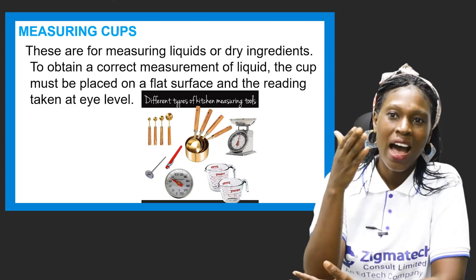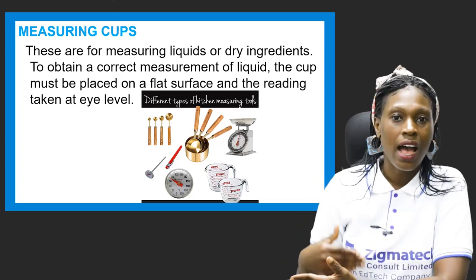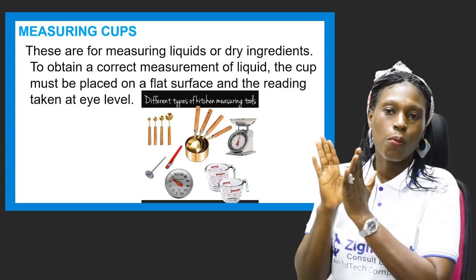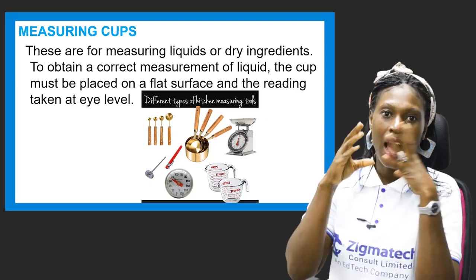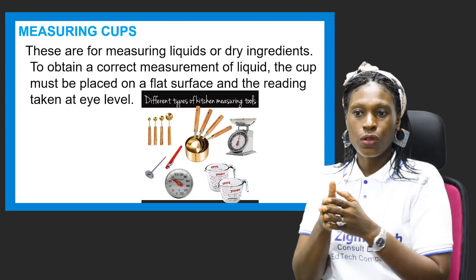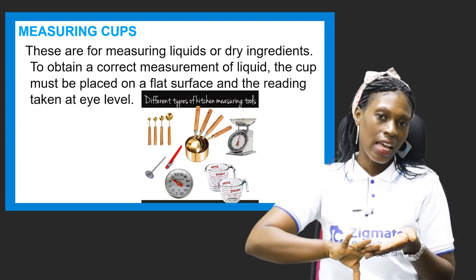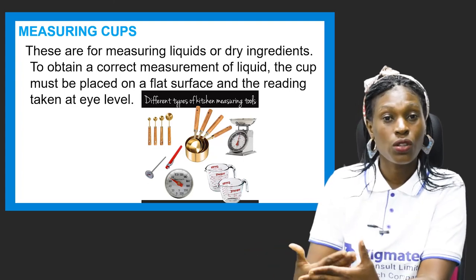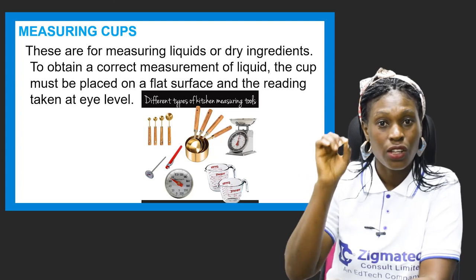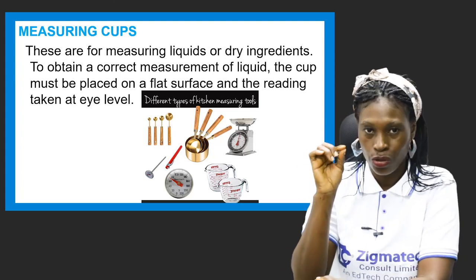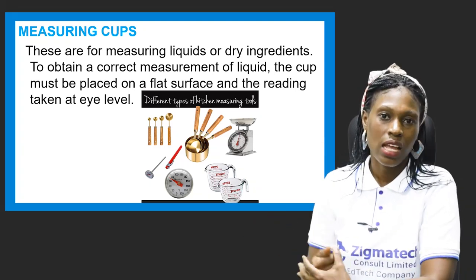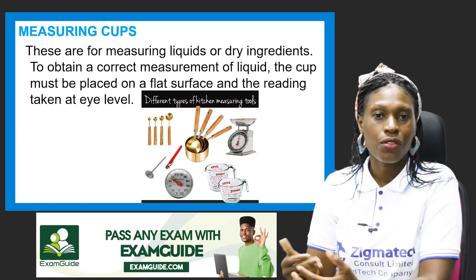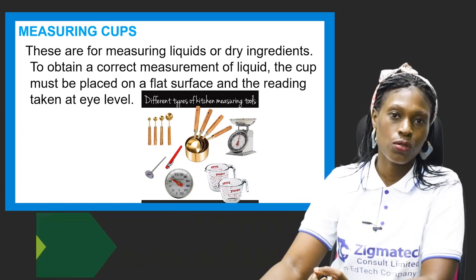We also have measuring cups. Measuring cups are used to measure liquid or dry ingredients to obtain the correct measurement. For liquids, the cup must be placed on a flat surface and the reading taken at eye level. As you can see in the picture, we have different types of measuring cups, marked in milliliters. You can find them in the market and use them to prepare your snacks or whatever you're making at home.